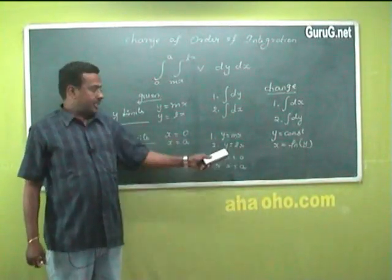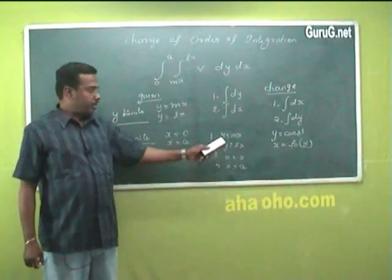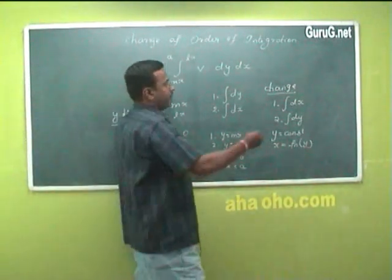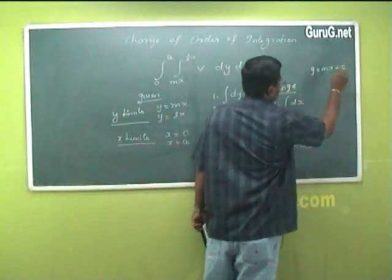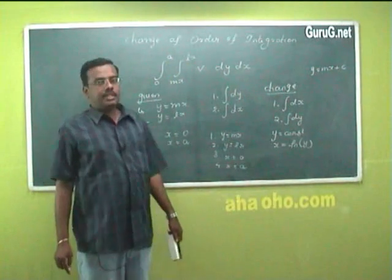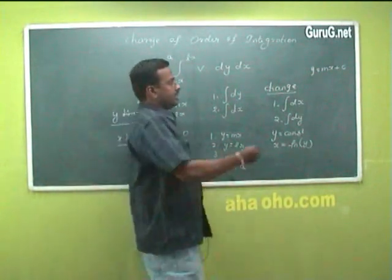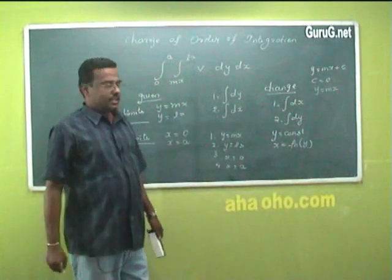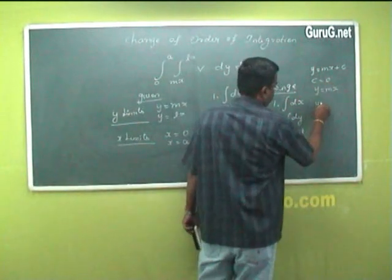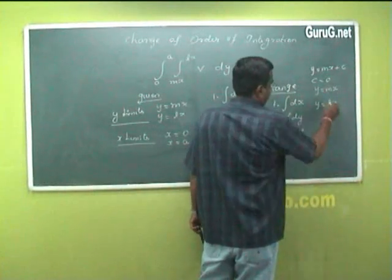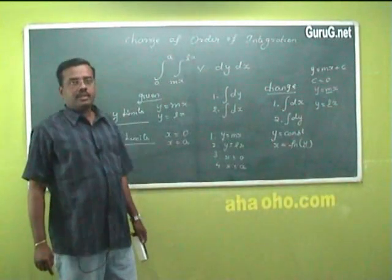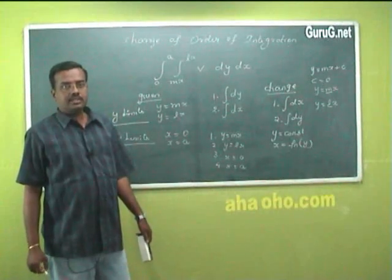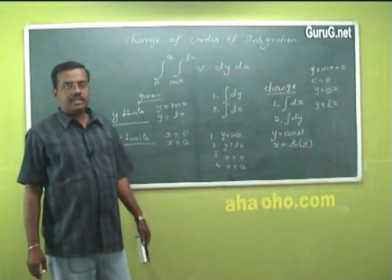y = mx is a straight line whose slope is m. The general equation of a straight line is y = mx + c, where m is the slope and c is the y-intercept. Here c = 0, so y = mx is a straight line through the origin. Similarly, y = lx is also a straight line whose slope is l, where m and l are two different values. Using these four limits, you have to draw and identify the region of integration.